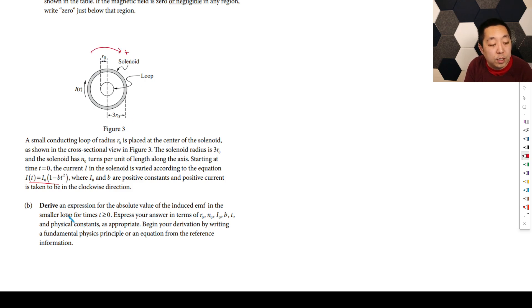Derive an expression for the absolute value of the induced EMF in the smaller loop for times T greater than or equal to 0. Express your answer in terms of R0, N0, I0, B, T, and physical constants. Begin your derivation. And if we're inducing an EMF, that's due to a rate of change in the flux. So we've got to think about what the flux is going to be.